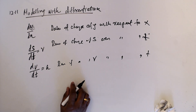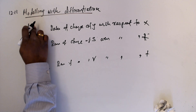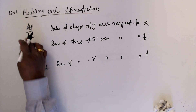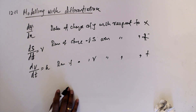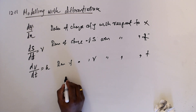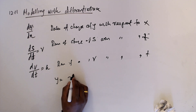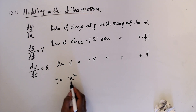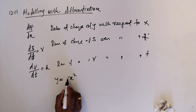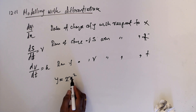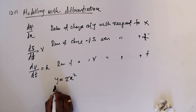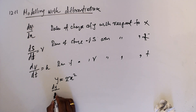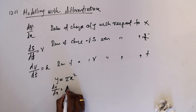To find the rate of change of y with respect to x, you need a relationship between y and x. For example, if y = 2x², then the rate of change of y with respect to x is 4x.